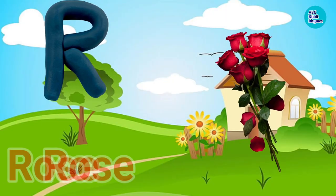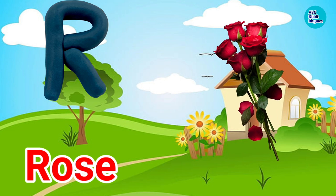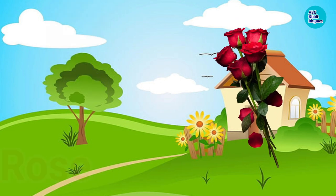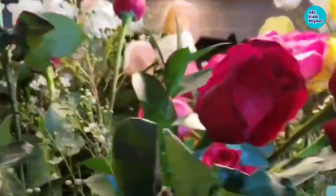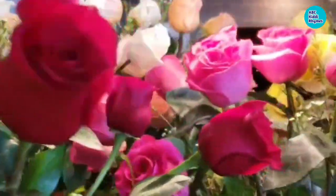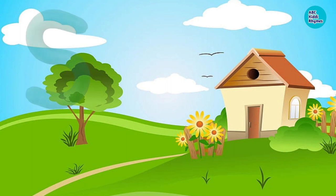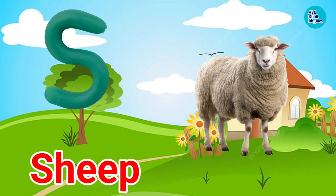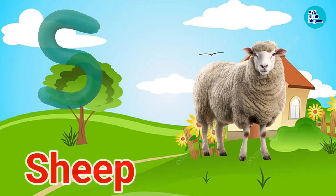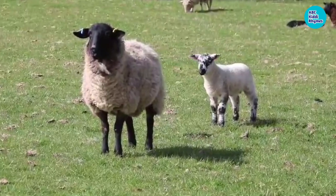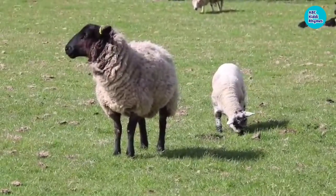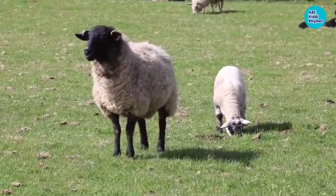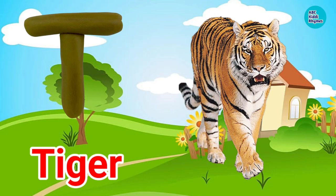R. R for Rose. Rose means Gulab. S. S for Sheep. Sheep means Bed. T. T for Tiger. Tiger means Cheetah.